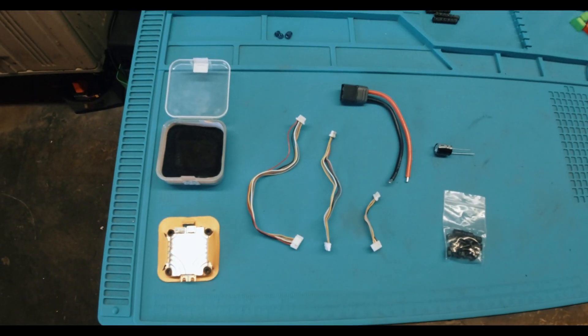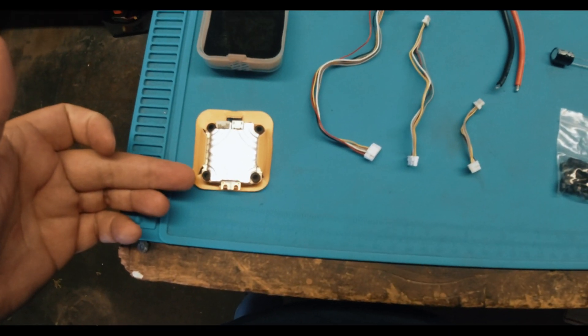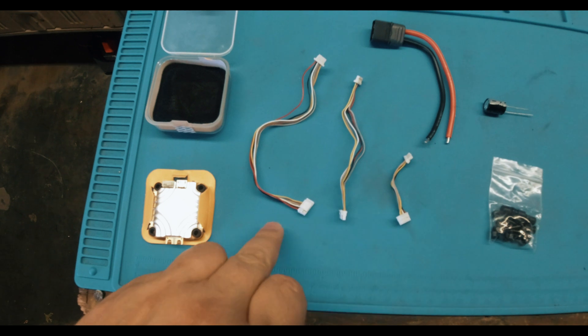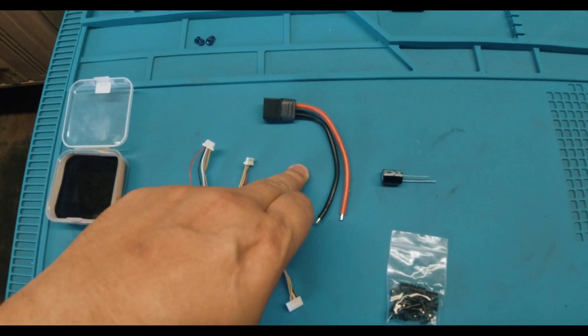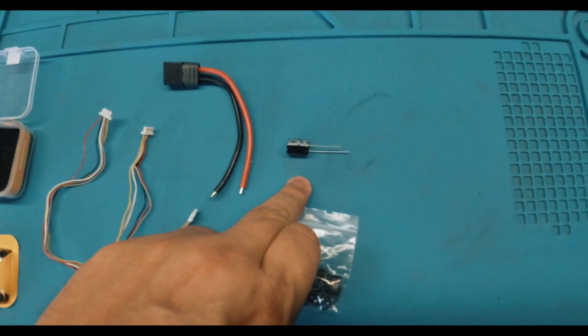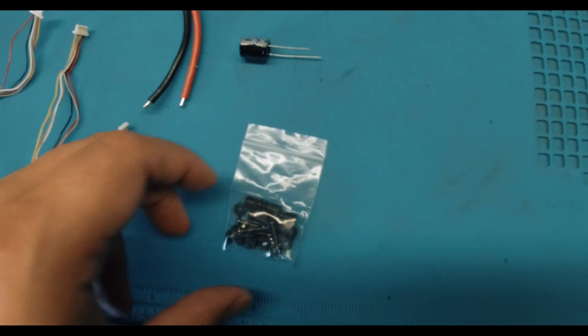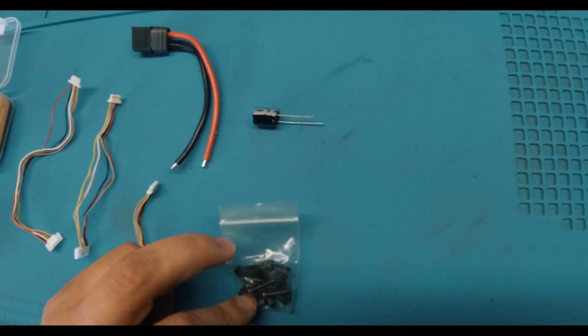What comes with it is the little case, the flight controller all-in-one unit, three DJI cables (a long one, a medium, and a short one), an XT60 cable, a 470 microfarad capacitor, and then a bag of hardware and flight controller isolators.